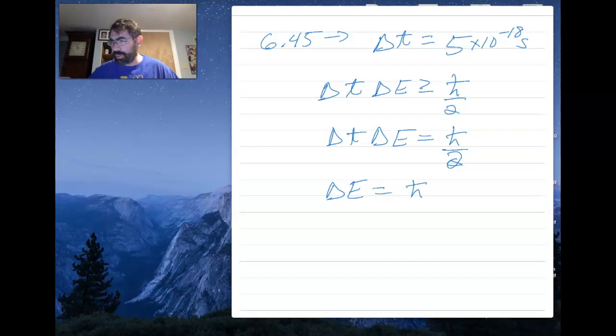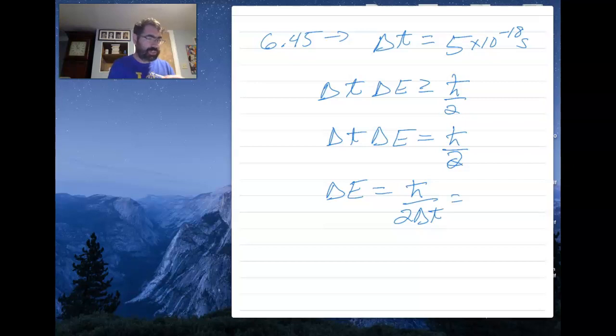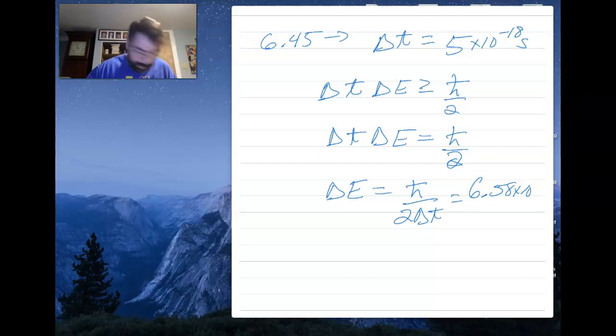If I look in the front cover of the book, h bar is 6.58 times 10 to the minus 16 electron volt seconds divided by 2 times the time, which is 5 times 10 to the minus 18 seconds.